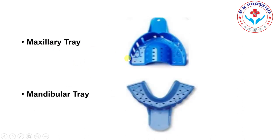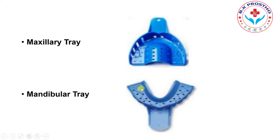These are trays for different arches: one for the maxillary arch and one for the mandibular arch. The difference between maxillary and mandibular trays is that the maxillary tray has a palatal part to give support to the palatal area, while the mandibular tray has a lingual flange to record the impression of the lingual sulcus.